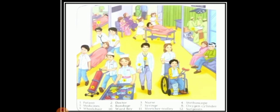There are doctors and nurses. What is the doctor wearing around his neck? Doctors are wearing something on their neck to hear a heartbeat — it is called a stethoscope. And there are so many medicines, bandages, and a syringe with which the nurse gives us an injection.